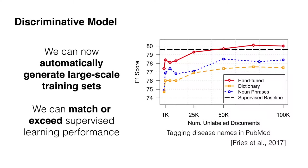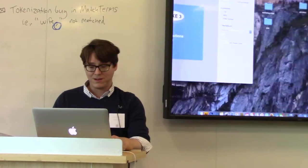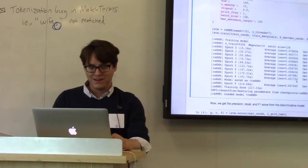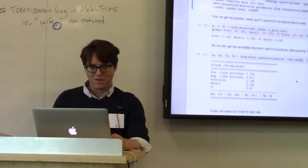We can match or exceed supervised learning performance. The dashed line shows the F1 score when training on hand-labeled data — and as you keep feeding the model more information, you eventually do better. We can look at our RNN and see what our performance is.